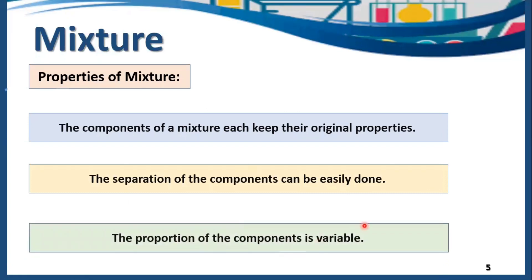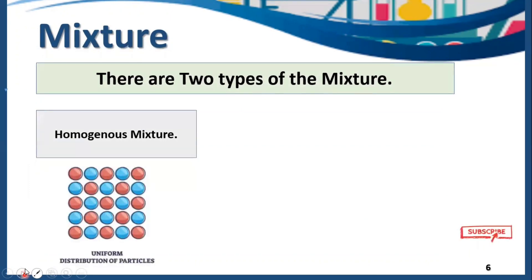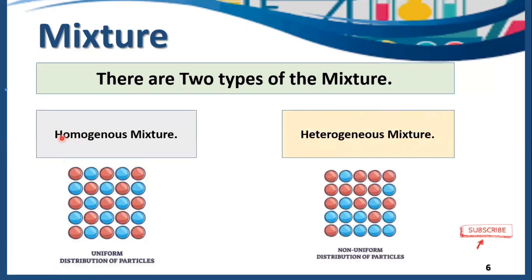The proportion of components in a mixture is variable. For example, in a mixture of water and pebbles, we can take 20 grams of pebbles and one liter of water, or we can take two liters of water and 30 grams of pebbles. So the ratio of components is variable — we can take any ratio in order to form a mixture.